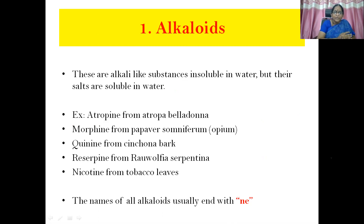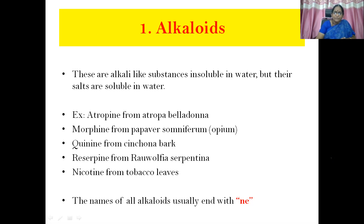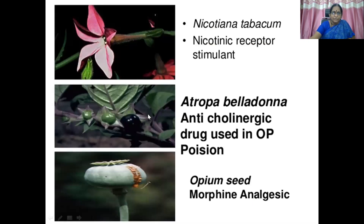Then alkaloids — plant products with properties similar to that of alkalis. They are alkali-like substances insoluble in water, but their salts are soluble in water — for example, atropine sulfate. Examples: atropine from Atropa belladonna, morphine from Papaver somniferum, quinine from cinchona bark, reserpine from Rauwolfia serpentina, and nicotine from tobacco leaves. The names of alkaloids usually end in '-ine': atropine, morphine, quinine, reserpine, nicotine. Vinca alkaloids from Vinca rosea are used in the management of cancer; digitalis is used for congestive heart failure; quinine is an antimalarial extracted from cinchona bark; and reserpine, an antihypertensive agent, is extracted from Rauwolfia serpentina.